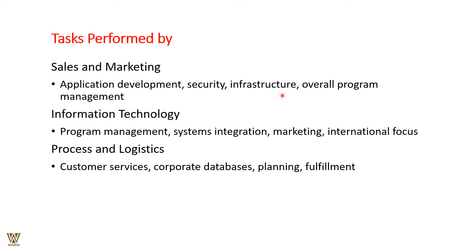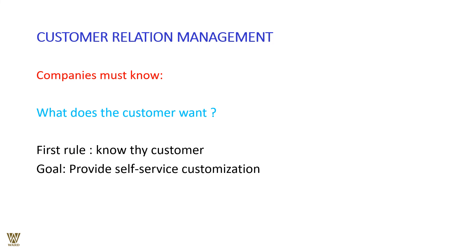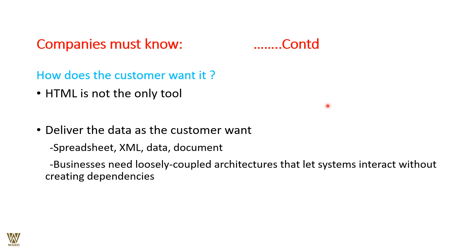These are the basic kernels and monitoring aspects that need to be understood and controlled across all three departments. Moving to customer relationship management: the first goal is to know your customer — if you do not know your customer, you will not have repeat business. The goal is to provide self-service customization; the better the customer can customize toward their own liking, the better.